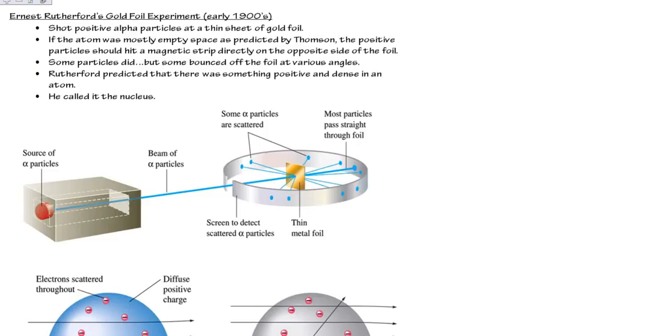All right, so at this point in the game we have atoms. The atoms have electrons. The electrons are randomly scattered throughout this positive material. We know that that's not right.